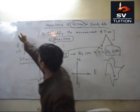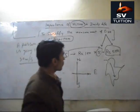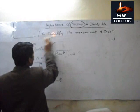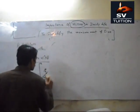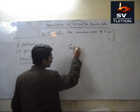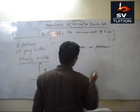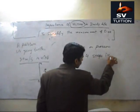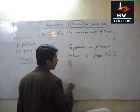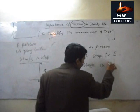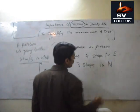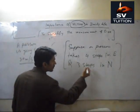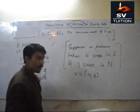One more example I will explain. Suppose a person takes four steps in East and then three steps in North. Now what is its quantity? Its quantity is just 4, 3. This is a vector. How we will show it?